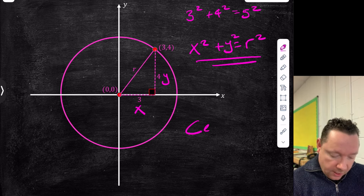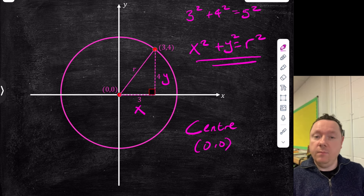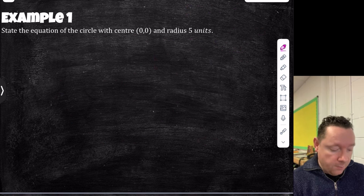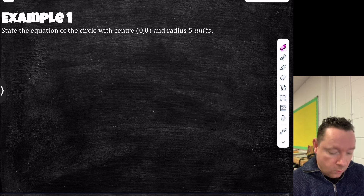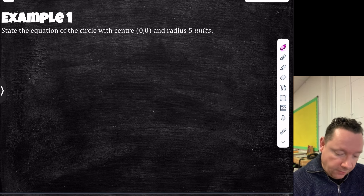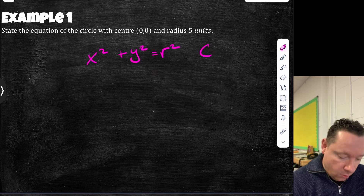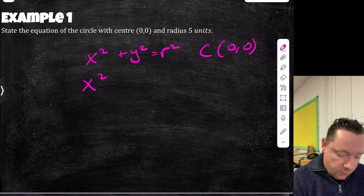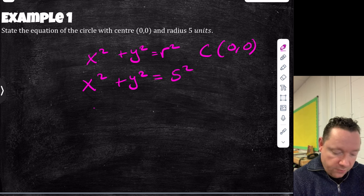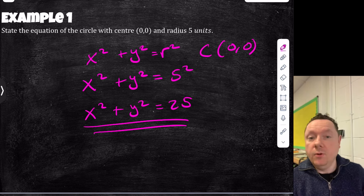The centre has to be (0,0) for this form. We're going to start with circles centred at (0,0) then move the centre. Example 1: state the equation of a circle with centre (0,0) and radius 5. That's easy — x² + y² = r², so x² + y² = 5², or equivalently x² + y² = 25.